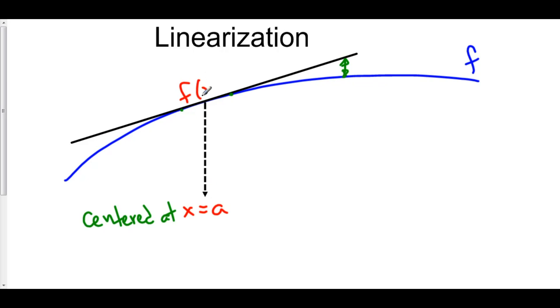Our point is a comma f of a. And you need a slope. Well, the slope of this tangent line is the derivative at x equals a. Well, we just call that f prime of a.